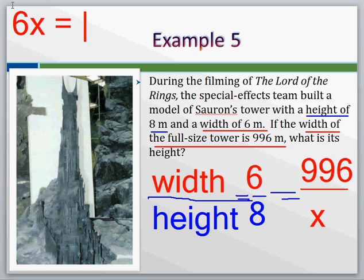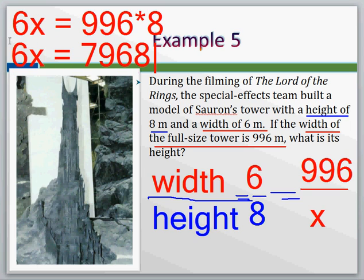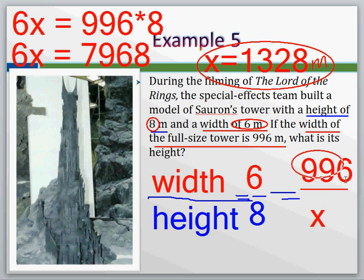If we cross-multiply these out, 6x equals 996 times 8. Putting that into our calculators, 996 times 8 gives us 7,968. So we have 6x equals 7,968. If we divide both sides by 6 now, we wind up with 1,328. That means that for the filming of the Lord of the Rings trilogy, Sauron's tower ended up being a full height of 1,328 meters, which seems reasonable because if you look at this ratio, the height 8 was bigger than the width of 6, and so the height of the real one is a bit bigger than the width of the real one.